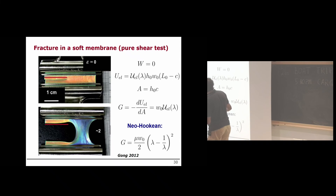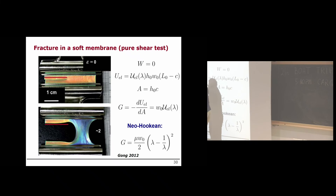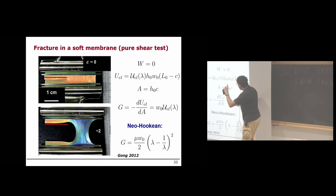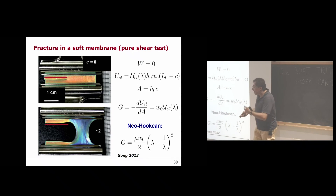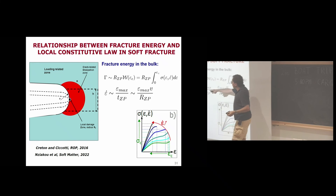Moving to dissipative systems: the red dissipative zone near the crack tip is now as large as the large-strain region. We can no longer use purely elastic energy arguments. Dissipation is present everywhere, making it difficult to define a unique fracture energy that transfers between different test geometries such as peel, tack, and shear. This is the central open challenge for soft dissipative materials.